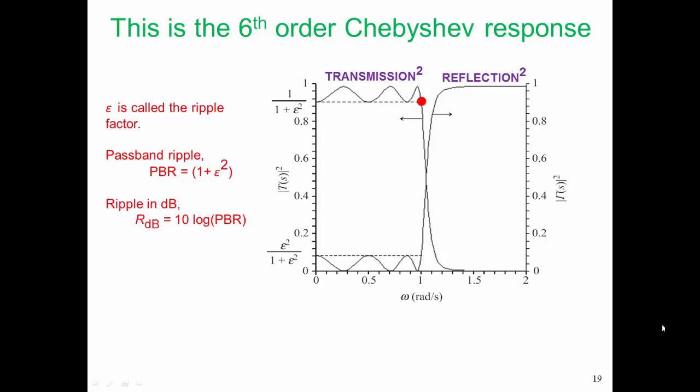At the corner frequency, and this corner frequency is omega zero, and that's where that big red dot is. At that corner frequency, our response will be down by the ripple. And we're plotting the square of the transmission response, so we're talking about power.